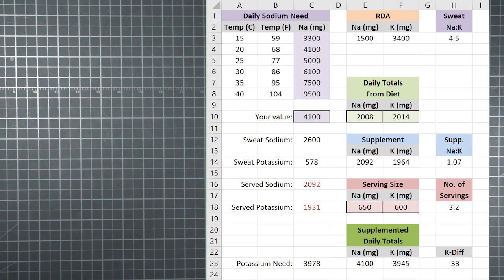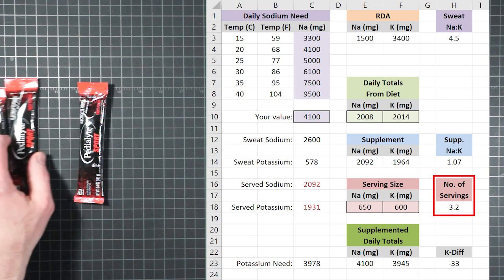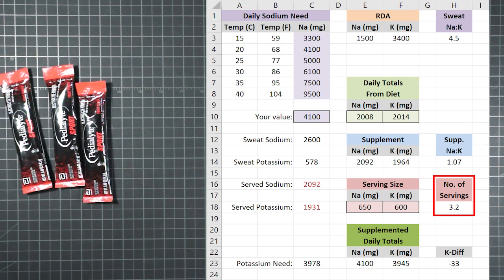Well, put it into the calculator and see what happens. Because the ratio is almost the same, the potassium changed only slightly. But look what happened to the number of servings. We're down to a much more realistic three servings a day, or thereabouts.